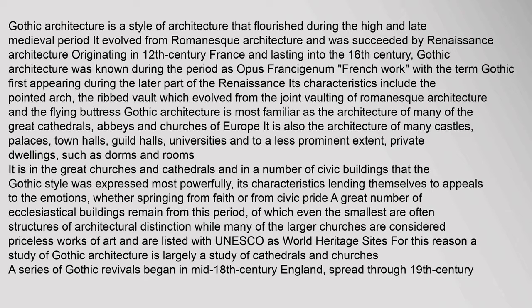Gothic architecture is a style of architecture that flourished during the high and late medieval period. It evolved from Romanesque architecture and was succeeded by Renaissance architecture, originating in 12th century France and lasting into the 16th century. Gothic architecture was known during the period as Opus Francigenum, with the term Gothic first appearing during the later part of the Renaissance. Its characteristics include the pointed arch, the ribbed vault, which evolved from the joint vaulting of Romanesque architecture, and the flying buttress. Gothic architecture is most familiar as the architecture of many of the great cathedrals, abbeys and churches of Europe.